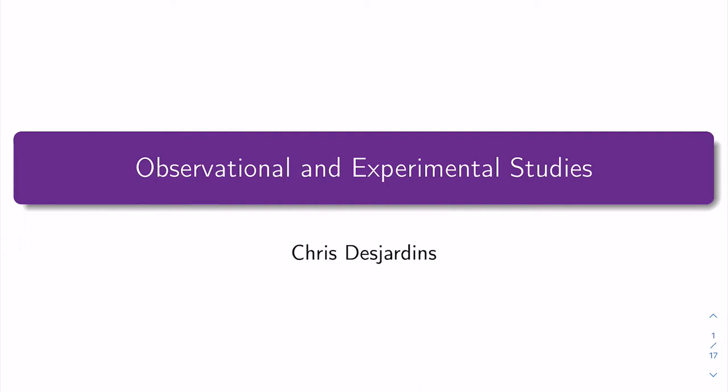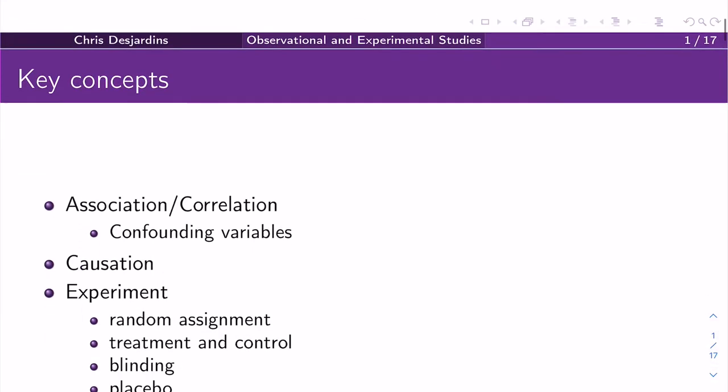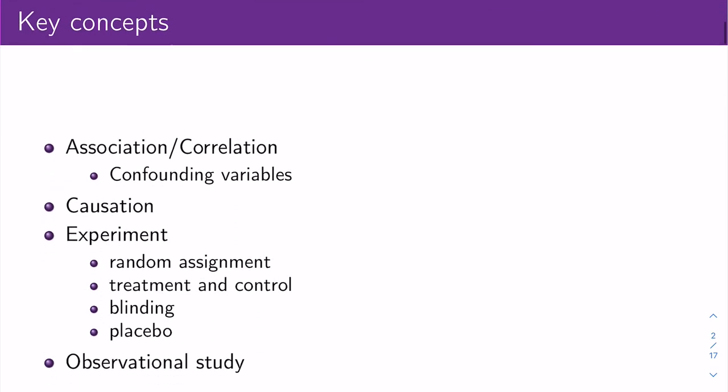Today we're going to talk about observational and experimental studies. This corresponds to section 1.3 in the LOC5 textbook. The key concepts in this section are: association or correlation, confounding variables, causation — which should be thought of in comparison to associations and correlations — experiments, and observational studies.